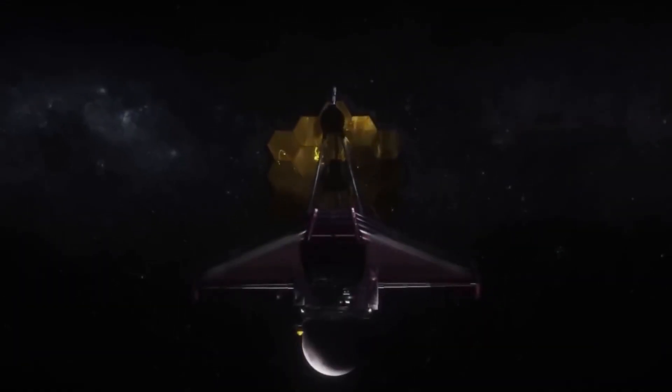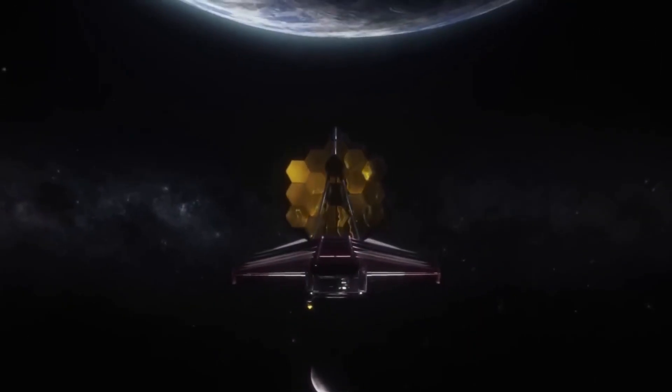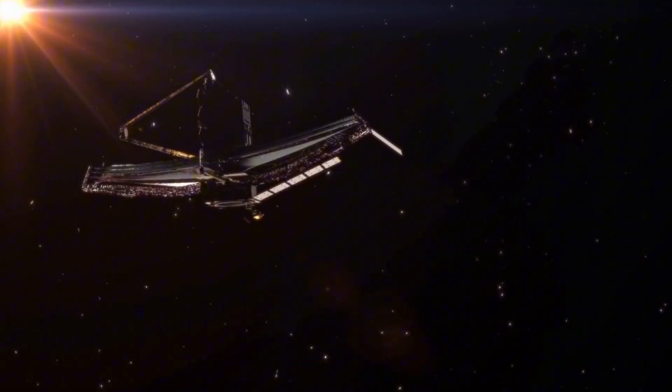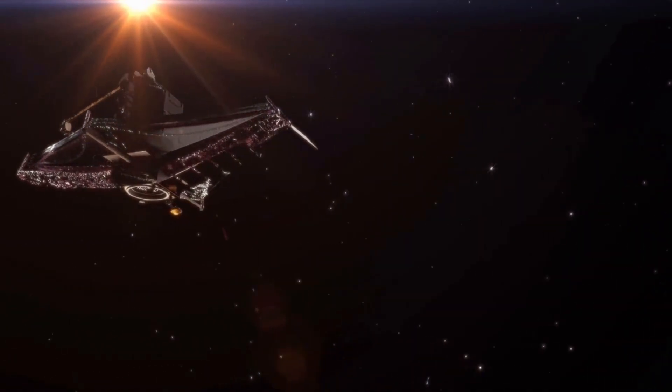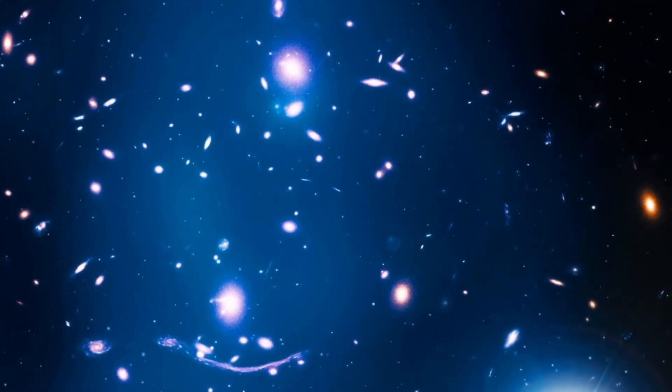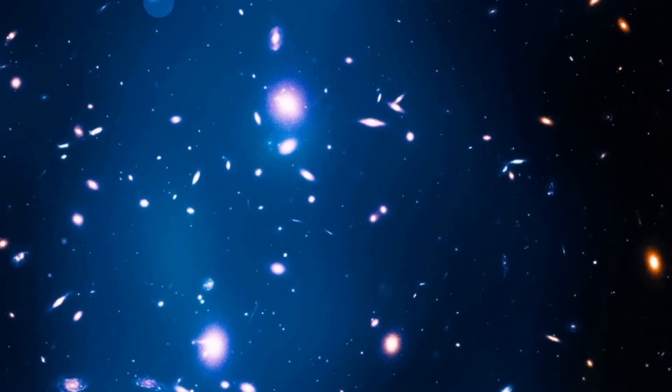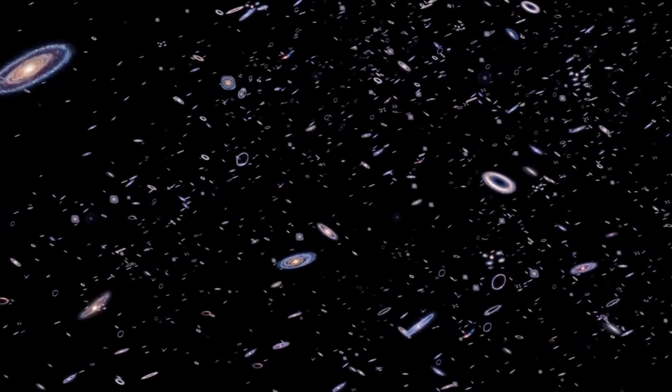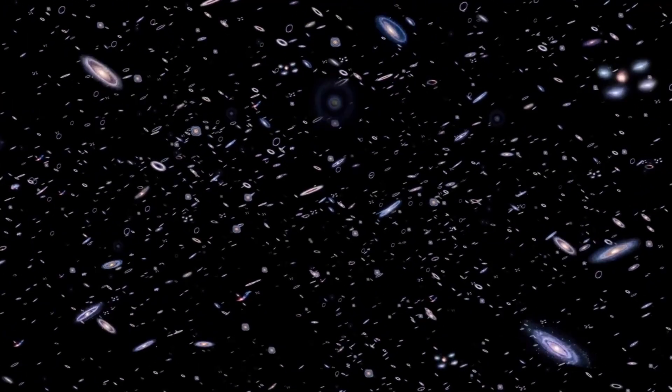Enter the James Webb Space Telescope, the most powerful eye ever cast into the cosmos. It has looked deeper than any telescope before, uncovering galaxies just 300 million years after the Big Bang. But here's the twist. These galaxies are too big, too structured, too mature. They shouldn't exist that early in cosmic history. Could the universe be older than we think?